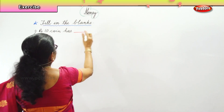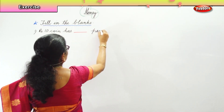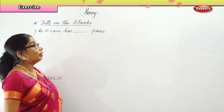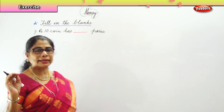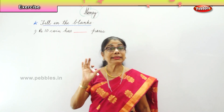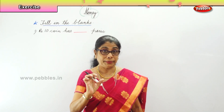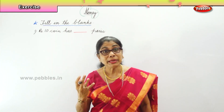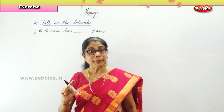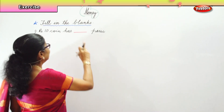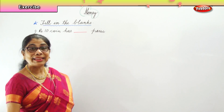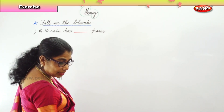Fill in the blank: dash rupees 10 coin dash paise. How many paise in a 10 rupee coin? Each fill in the blank has to be thought of very carefully. Now, 1 rupee has 100 paise, so you have to multiply 100 into 10. You get 1000 paise.